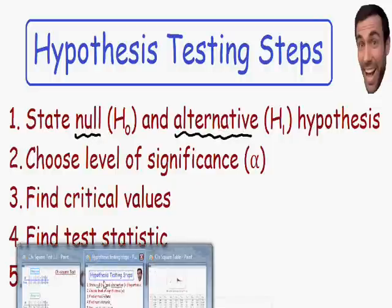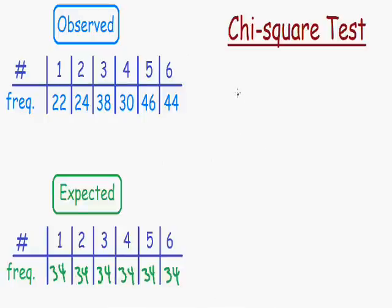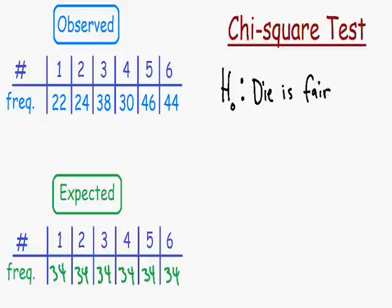Let's state our null and alternative hypothesis. The null hypothesis, written as H₀ or H-naught, is always what is currently believed to be true — we assume innocent until proven guilty. So we have to assume that the die is fair; it's currently believed that the die is fair. This is our null hypothesis: the die is fair. This means that the observed values are close enough to the expected values.